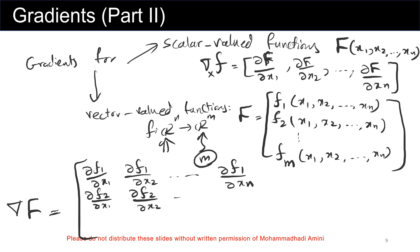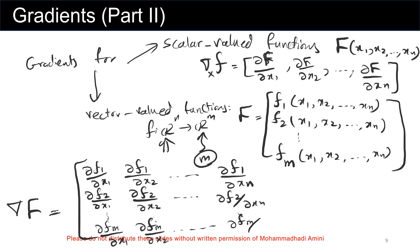The Jacobian includes partial derivatives of f sub 2 back to x2, and partial derivative of f sub m back to x sub m. That was all for the gradients. We may use them in future modules of this course, but at this point this is all that we want to know about gradients.